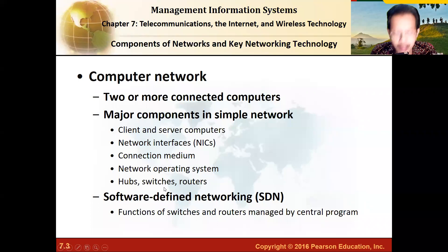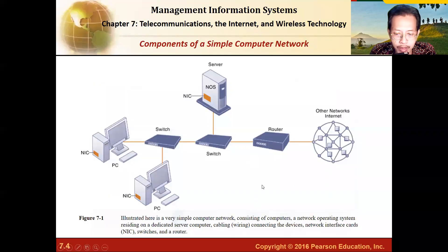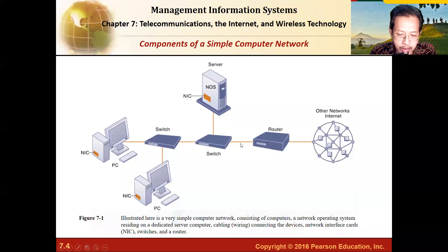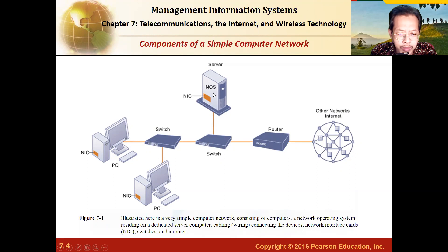You also have hubs, switches, and routers. If we put it diagrammatically, it would look like this: the internet would be accessed through a router, and then the transmission goes to a switch, which connects to a server. Inside the server, the hardware part is the network interface card — an electronic card acting like a modem, connecting between the computer and the switch — along with the network operating system.